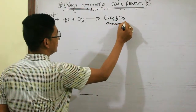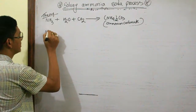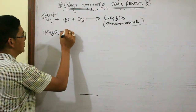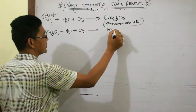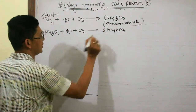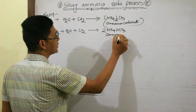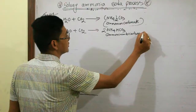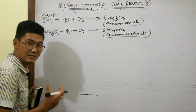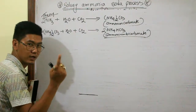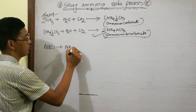CO2 and ammonia combine to form ammonium carbonate. This ammonium carbonate is very reactive. For the reaction, ammonium carbonate finally gives ammonium bicarbonate. We balance the equation and get ammonium bicarbonate.